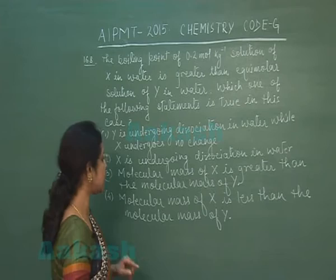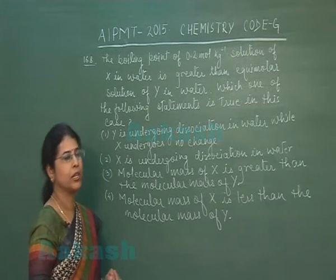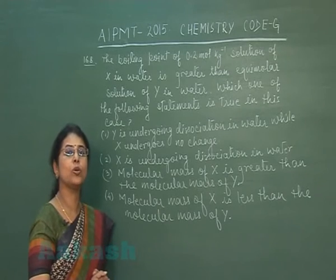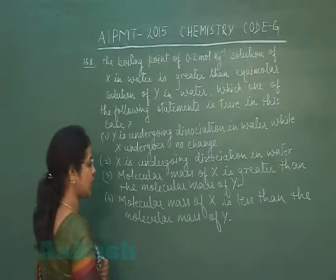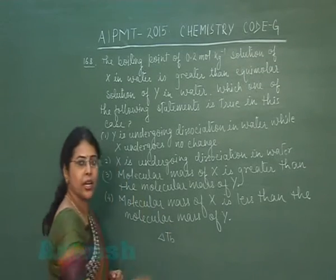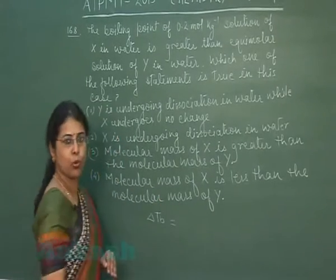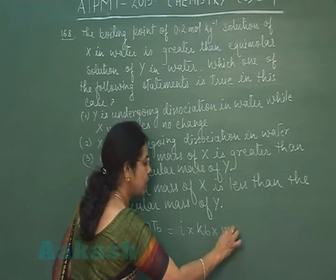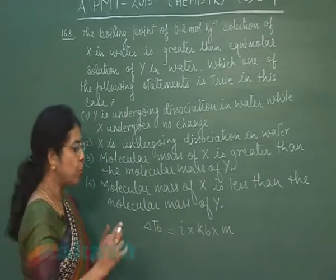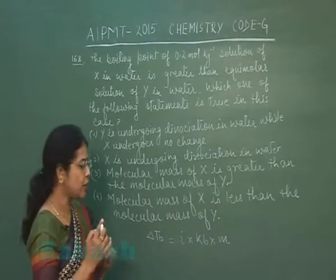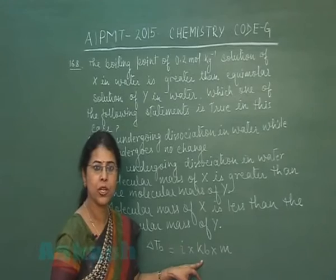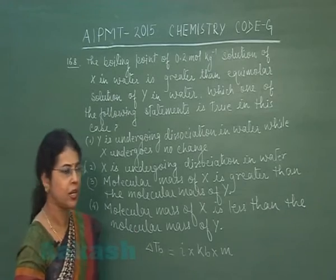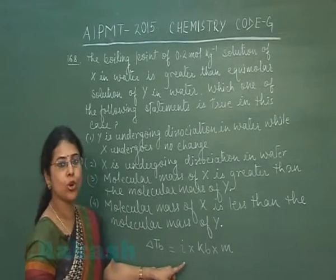Two solutions x and y are given — both are equimolar, so both have the same molality. Boiling point elevation is given by ΔTb = i × Kb × molality. Since both solutions are equimolar, they have the same Kb and the same number of moles. The only differing factor is the van't Hoff factor i.